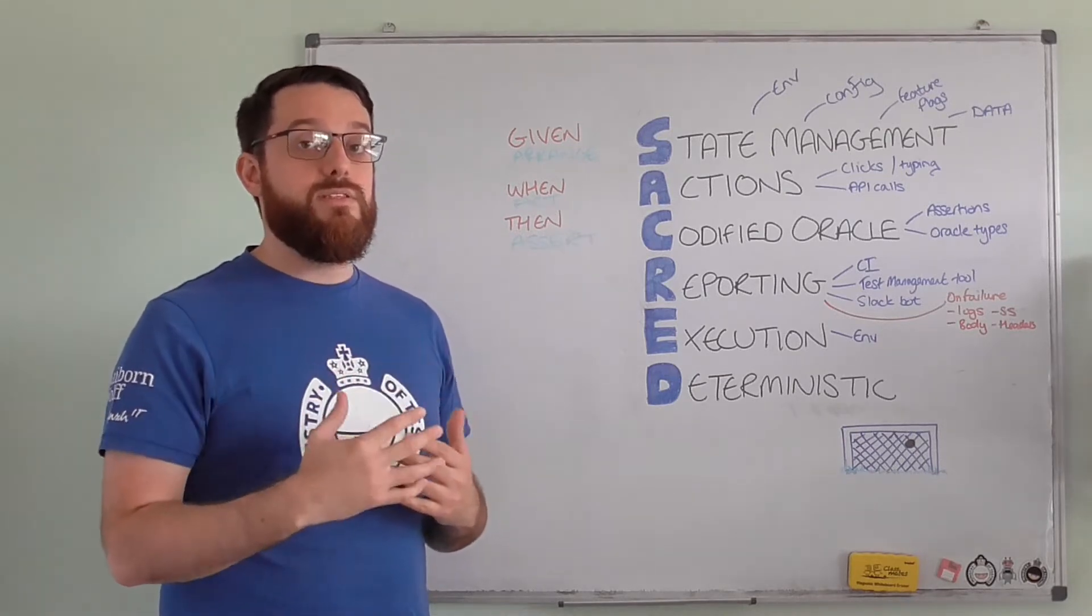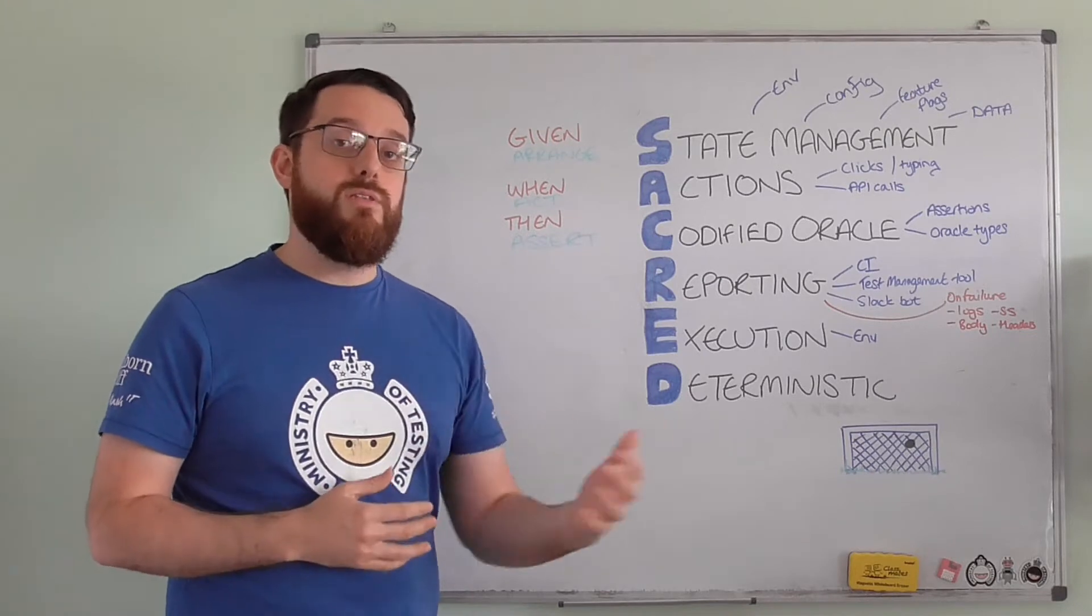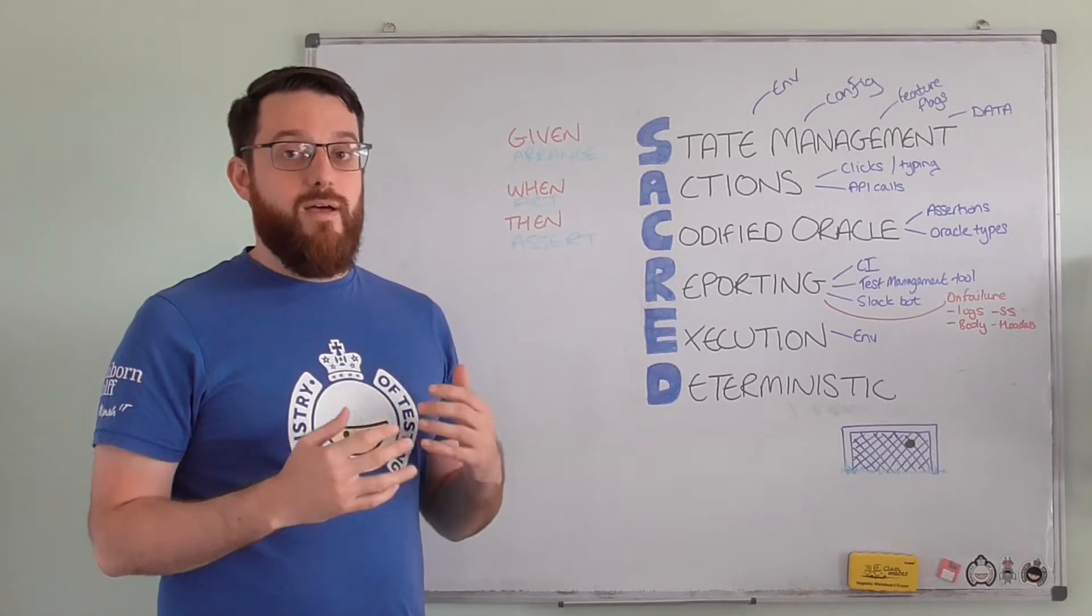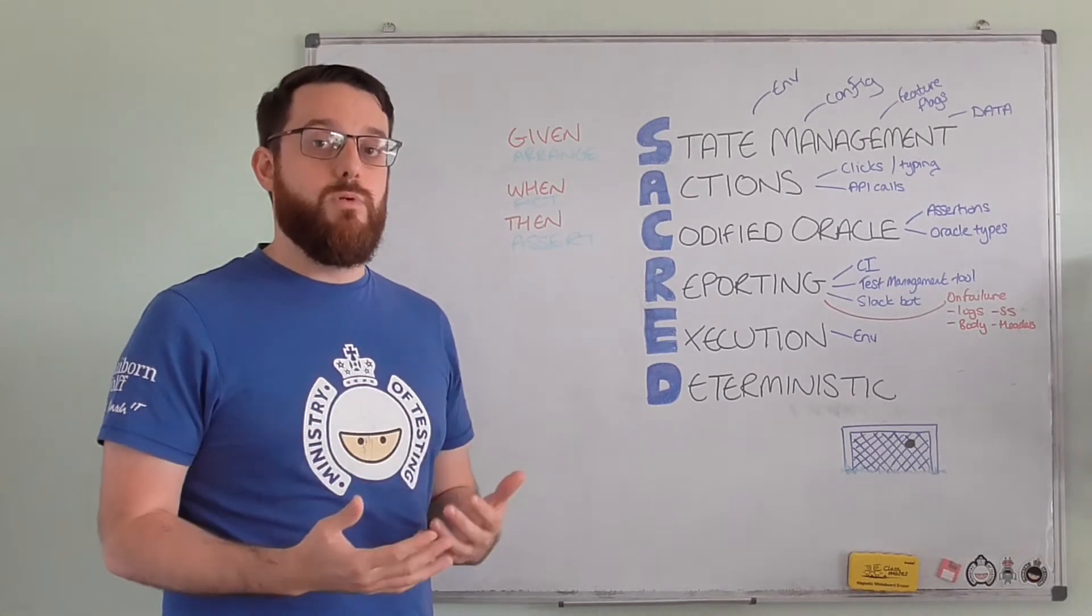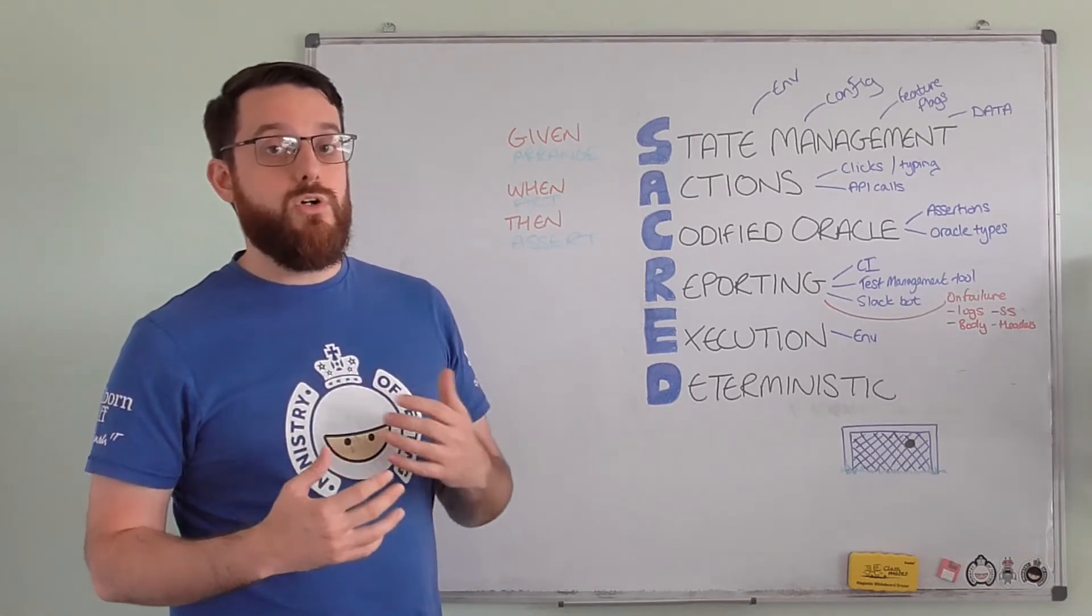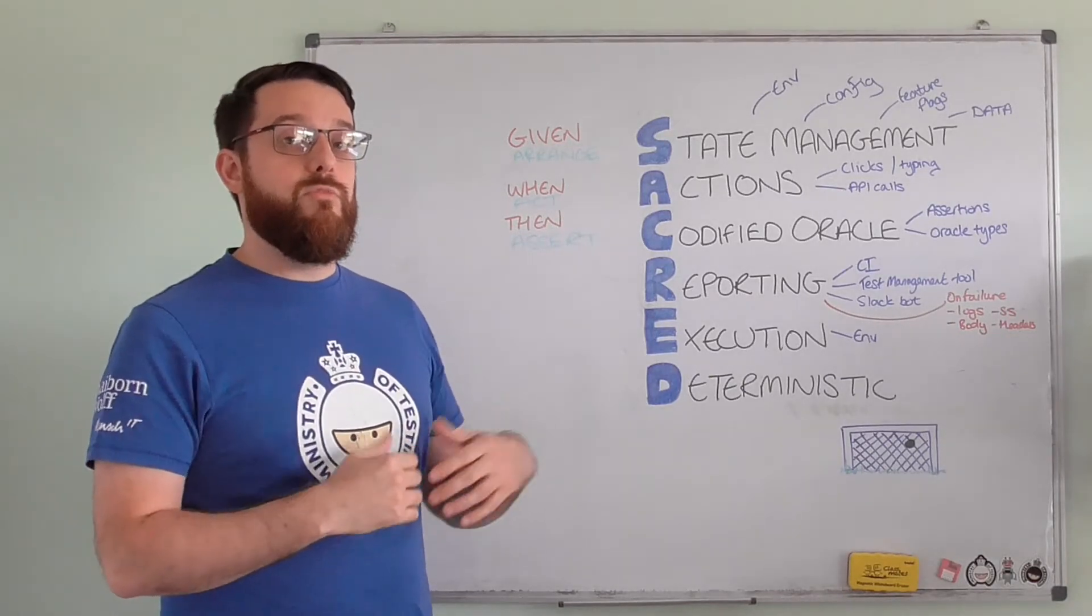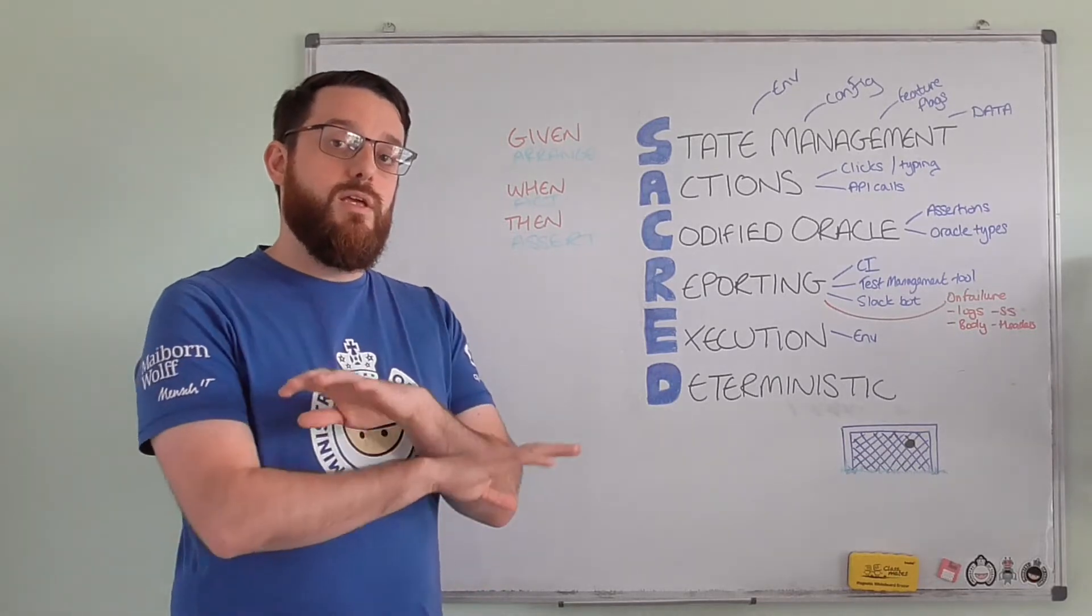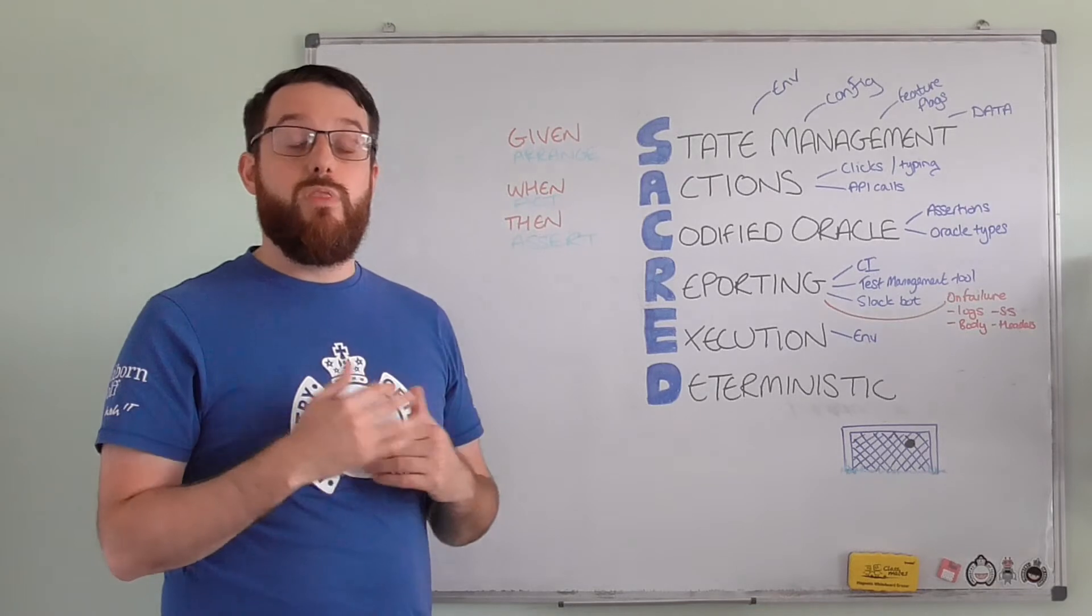You get that by understanding the testability of your system, understanding the skills on the team, talking to developers, talking to DevOps engineers if you have them, talking to product owners to try and make your products more testable. So if we can do that, we should be able to build little hooks, APIs, and start being able to create data on the fly or configure environments on the fly. Essentially, we want to put our applications in the right state ready for the check that we then want to run.